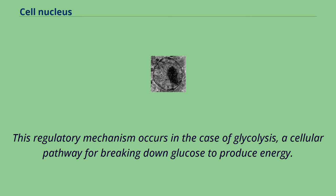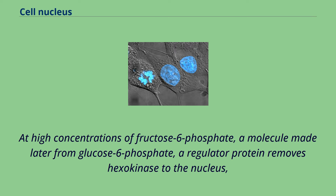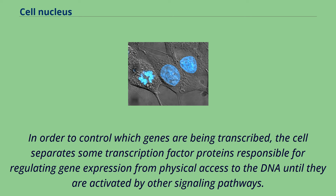Hexokinase is an enzyme responsible for the first step of glycolysis, forming glucose-6-phosphate from glucose. At high concentrations of fructose-6-phosphate, a molecule made later from glucose-6-phosphate, a regulator protein removes hexokinase to the nucleus, where it forms a transcriptional repressor complex with nuclear proteins to reduce the expression of genes involved in glycolysis. In order to control which genes are being transcribed, the cell separates some transcription factor proteins responsible for regulating gene expression from physical access to the DNA until they are activated by other signaling pathways. This prevents even low levels of inappropriate gene expression.